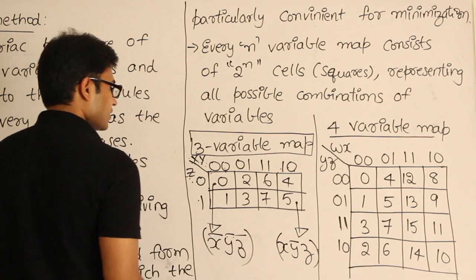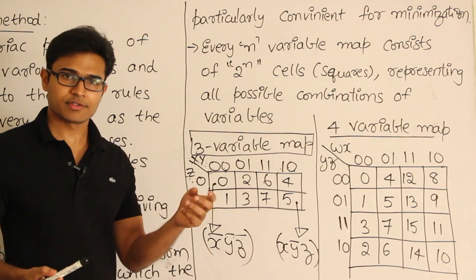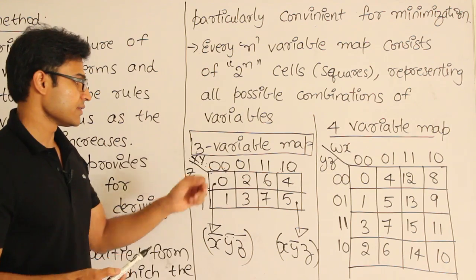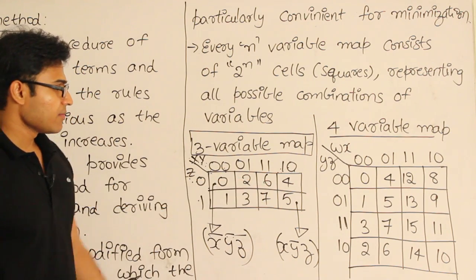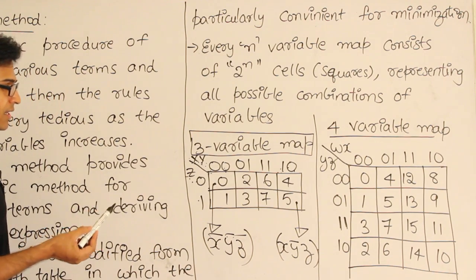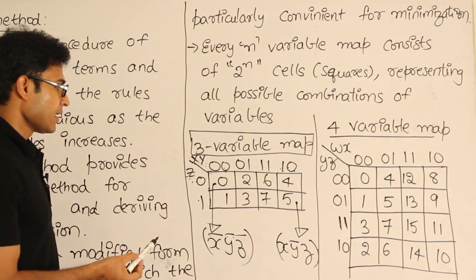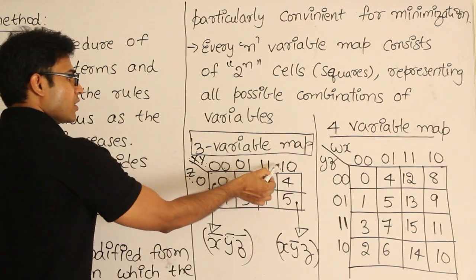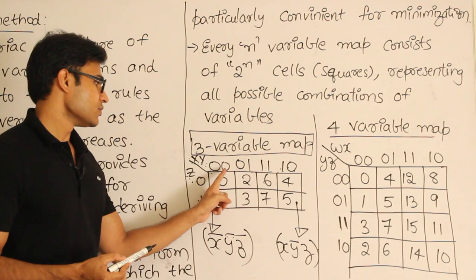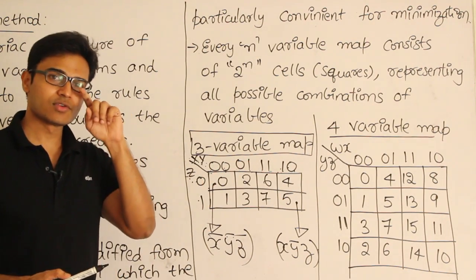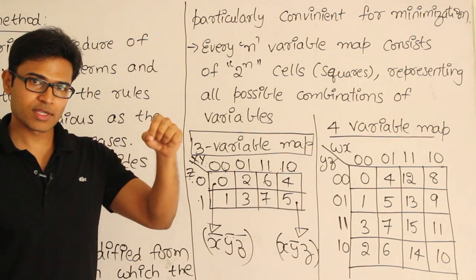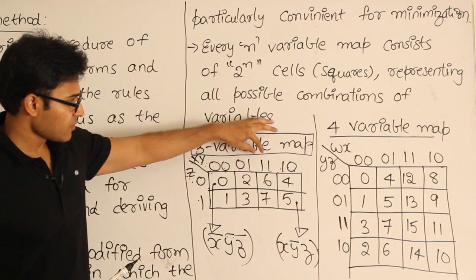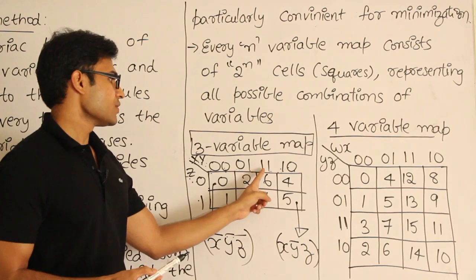There are 8 cells in the 3-variable map because 3 variables give 2^3 = 8 min terms, and each can independently be 1 or 0. I've written numbers in the cells just for convenience, but don't memorize them. One common mistake is writing the column headings as 00, 01, 10, 11 — that is wrong. You must write 00, 01, 11, 10. The reason is that two adjacent cells should have only one literal changing — I will explain that shortly. Just remember: use 00, 01, 11, 10, not 00, 01, 10, 11.